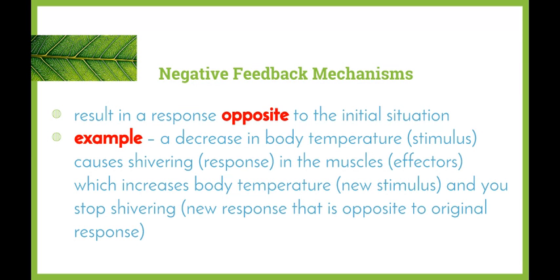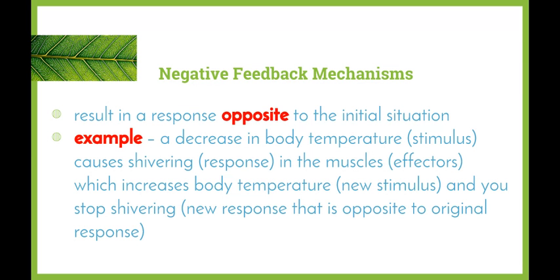Organisms need to maintain a narrow temperature range in order to function properly. For example, if we have a decrease in body temperature, the decrease is the stimulus, which causes shivering — the response in the muscles, which are the effectors. This increases our body temperature, which is the new stimulus, and then shivering stops. A new response brings about a stimulus that is opposite to the original stimulus, so the response is opposite to the original response.